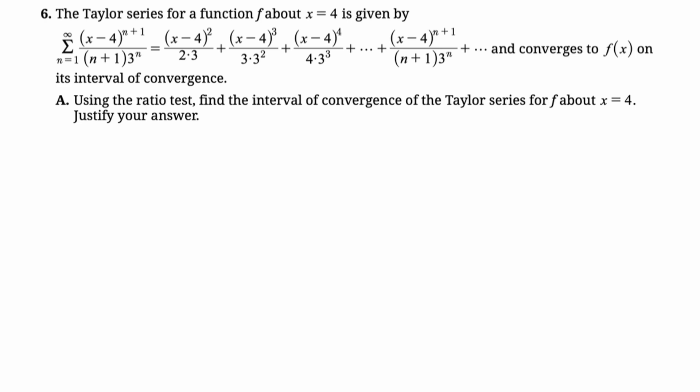So we're going to take the limit as n approaches infinity of the n plus first term. So every n that you see, replace it with n plus 1, which is why we end up with x minus 4 to the n plus 2, n plus 2, and then 3 to the n plus 1 times the reciprocal of the nth term. So that's just going to be n plus 1 times 3 to the n over the quantity x minus 4 to the n plus 1. Now we need to take this limit.